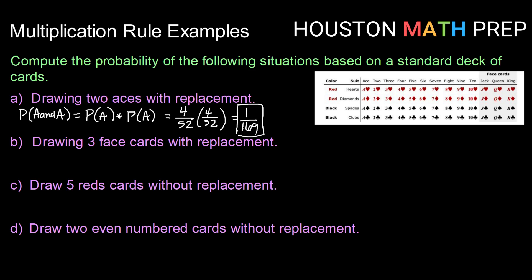Second one: drawing 3 face cards with replacement. With replacement makes each draw independent. So that would be the probability of a face card and a face card and a face card — the probability of a face card times itself 3 times, or we could think of that as cubed.